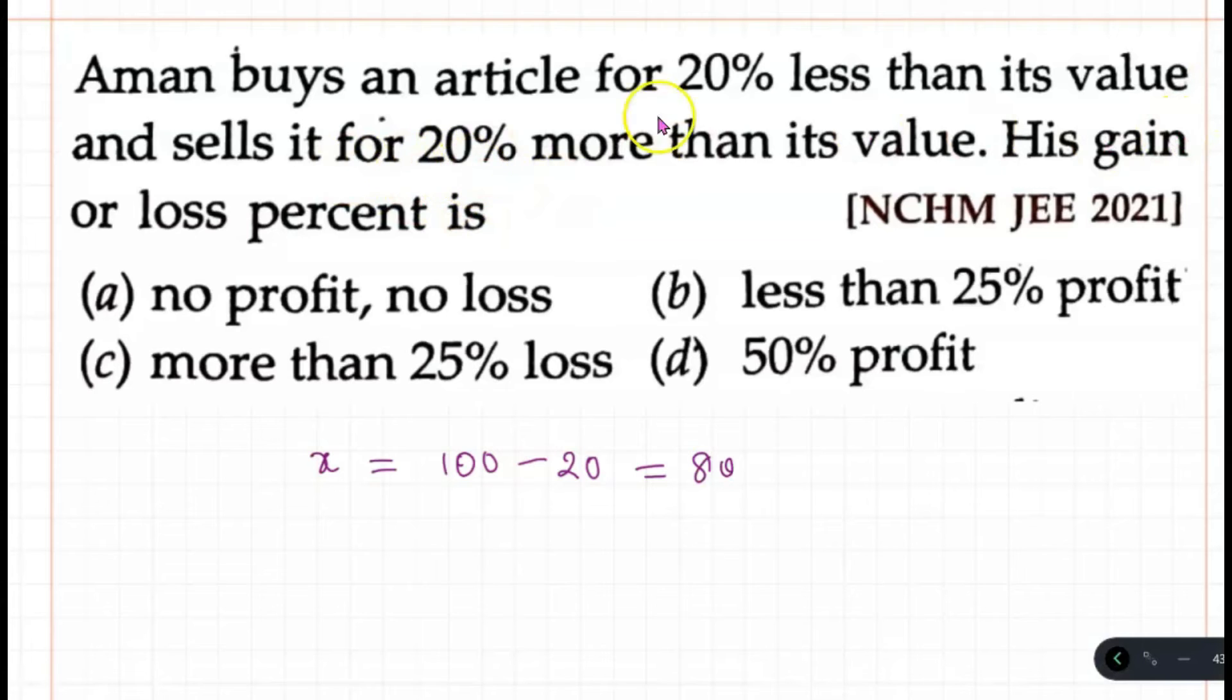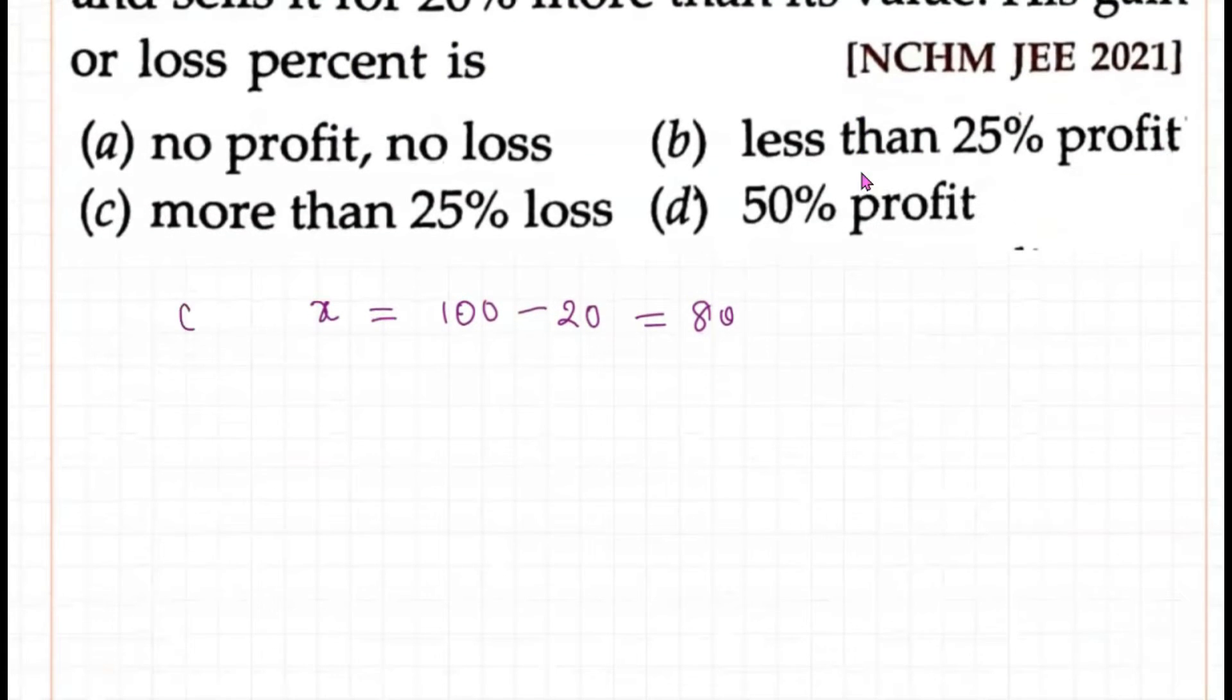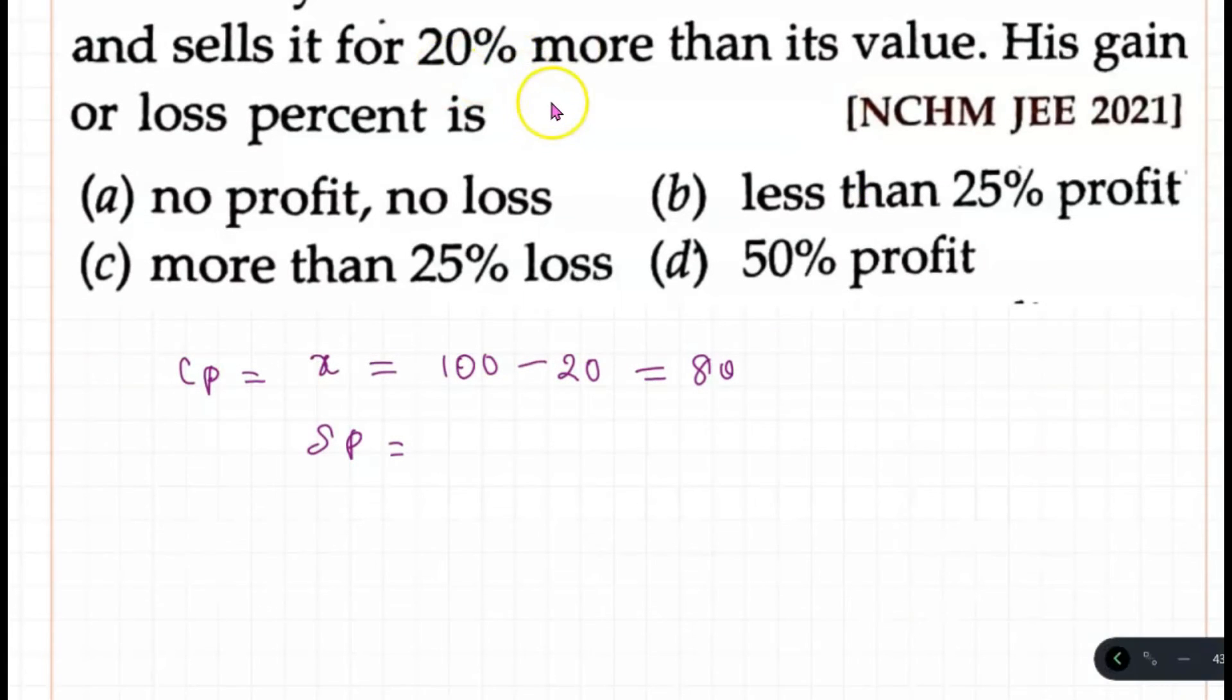And he sells it for 20% more than its value, so selling price would be—the cost price is 80, whereas selling price equals, he sold it for 20% more than its value. So if it is 100, he sold it for 20% more, which equals 120.